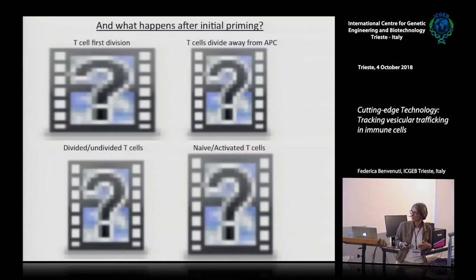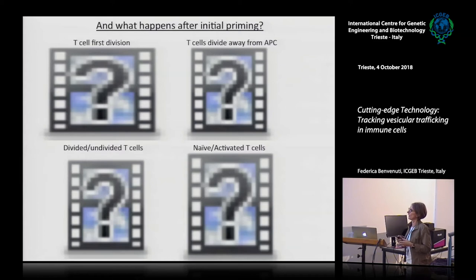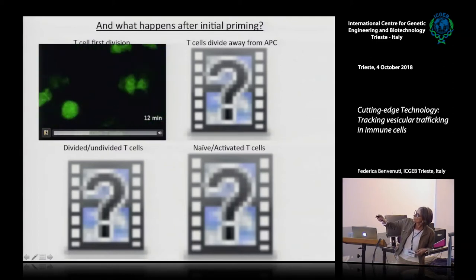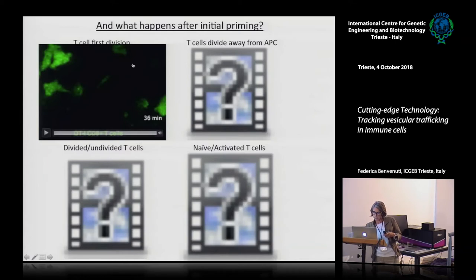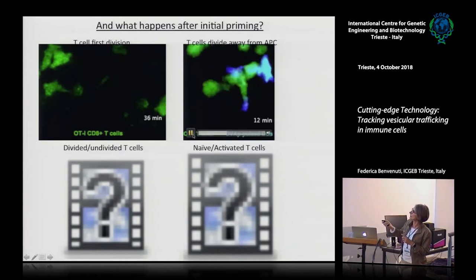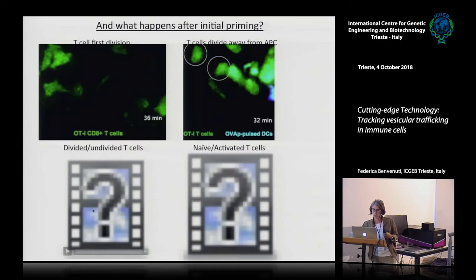Moving forward ten years to movies from 2018, what the group wanted to address is what happens to a T-cell once the contact is finished — when does the T-cell begin to proliferate? Does it do so while still sitting on the DC or later? People were able to really catch the event of division, and it was seen that the T-cell divides when it is no longer engaged with a DC.